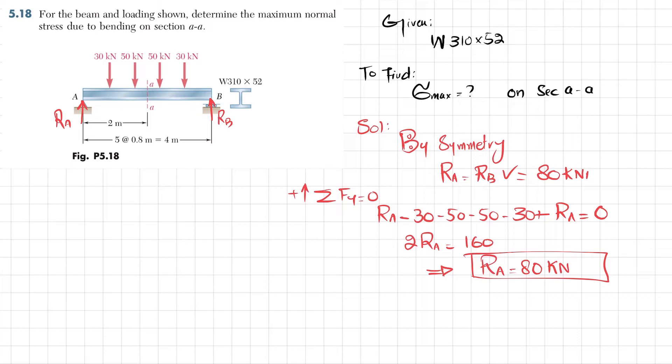Now for maximum stress at section AA, we will cut the beam at this position and we will write the free body diagram. So let me draw it first. If you take this beam, this is RA. This is one load, that is 30 kilonewtons, and the other one is 50 kilonewtons. When you cut the beam at section AA, there will be a shear force and a bending moment at this point J.